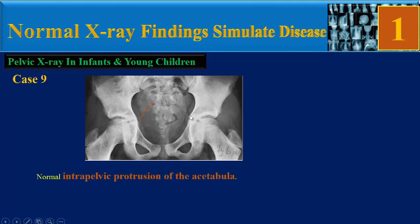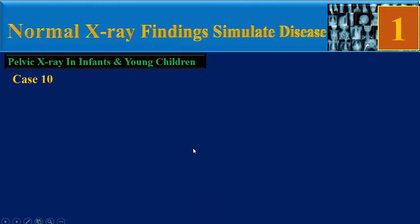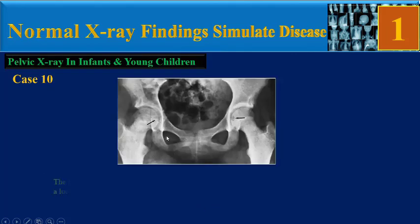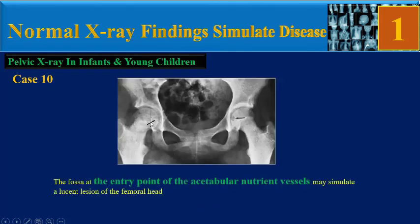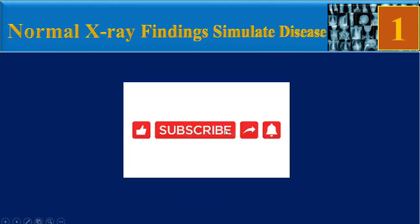Case 9: normal intrapelvic protrusion of the acetabula. This is a normal phase of development between 4 and 12 years of age. In the last case, the fossa at the entry point of the acetabular nutrient vessels may simulate a lucent lesion of the femoral head.